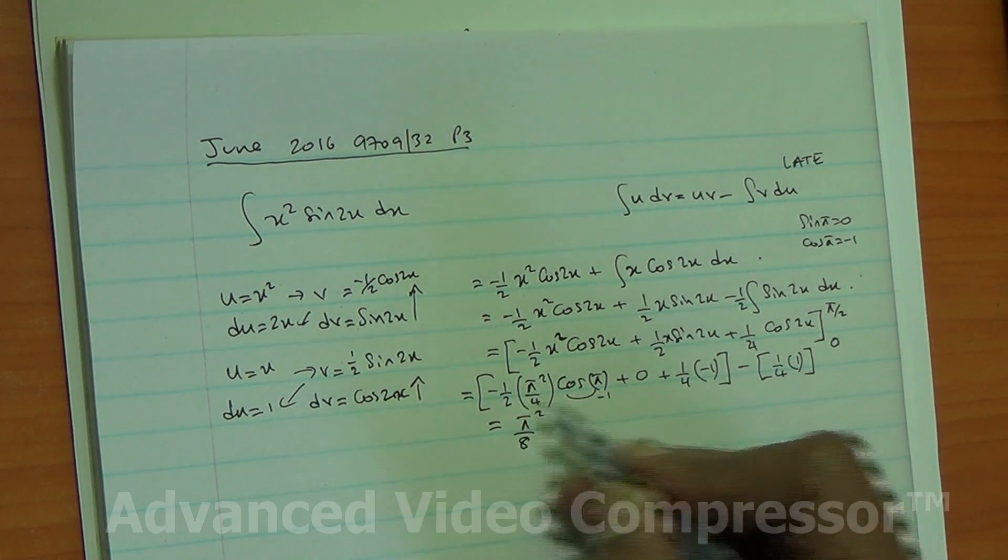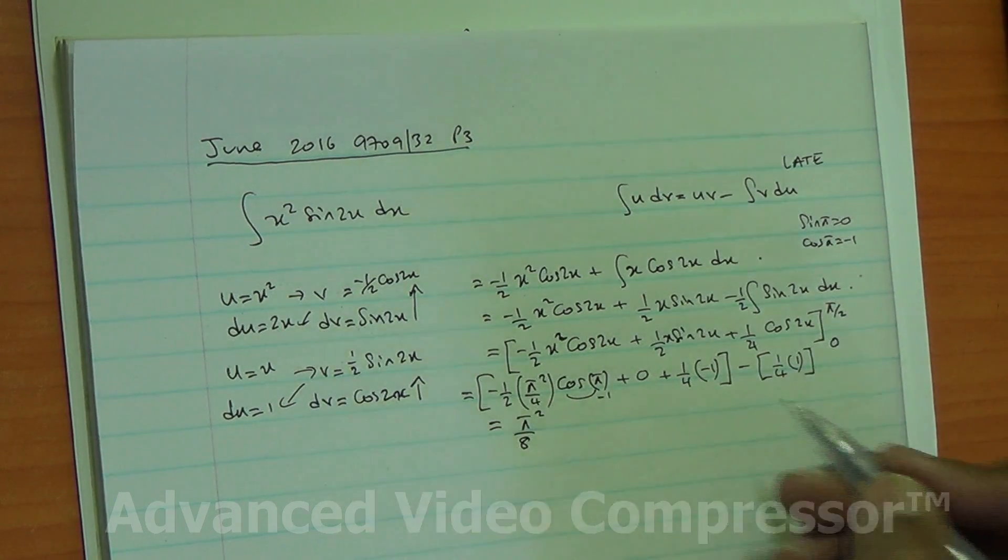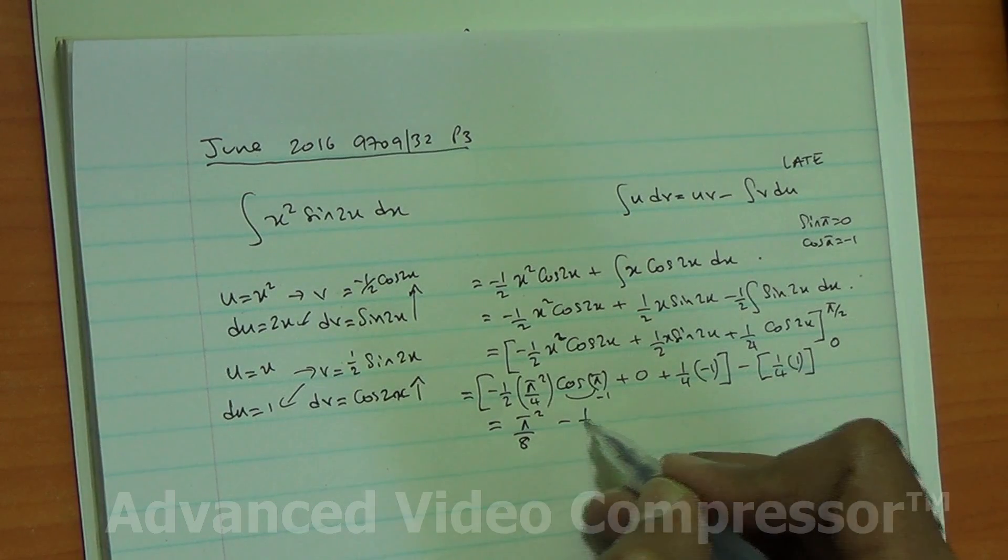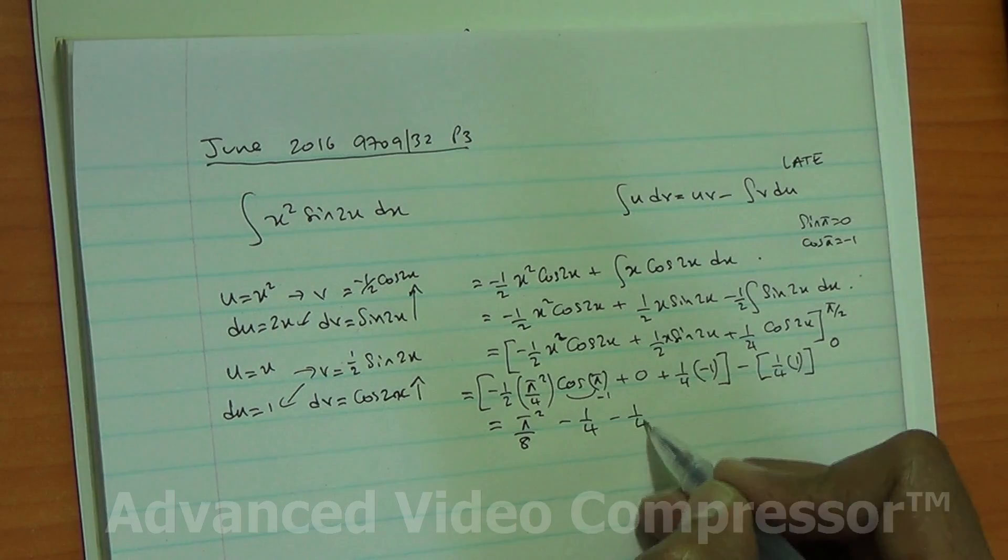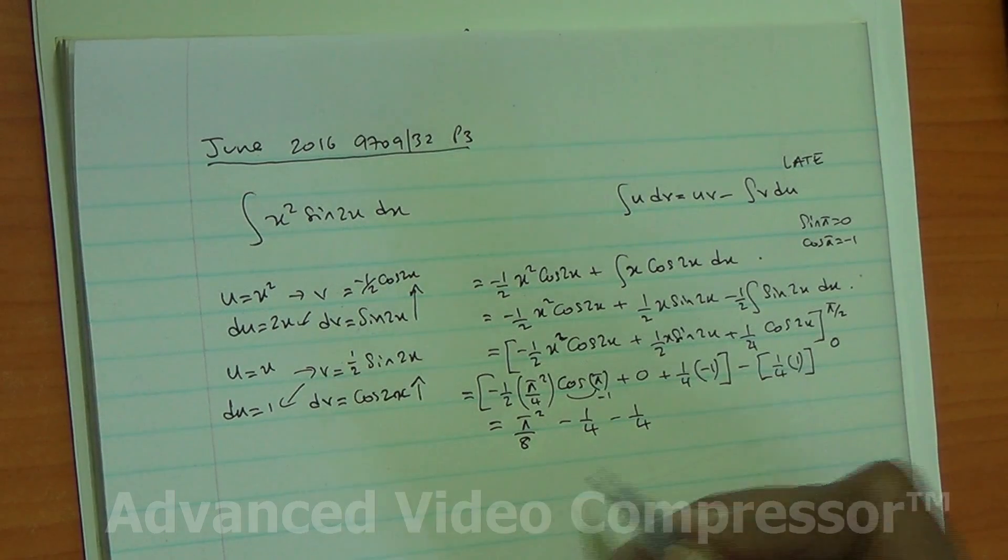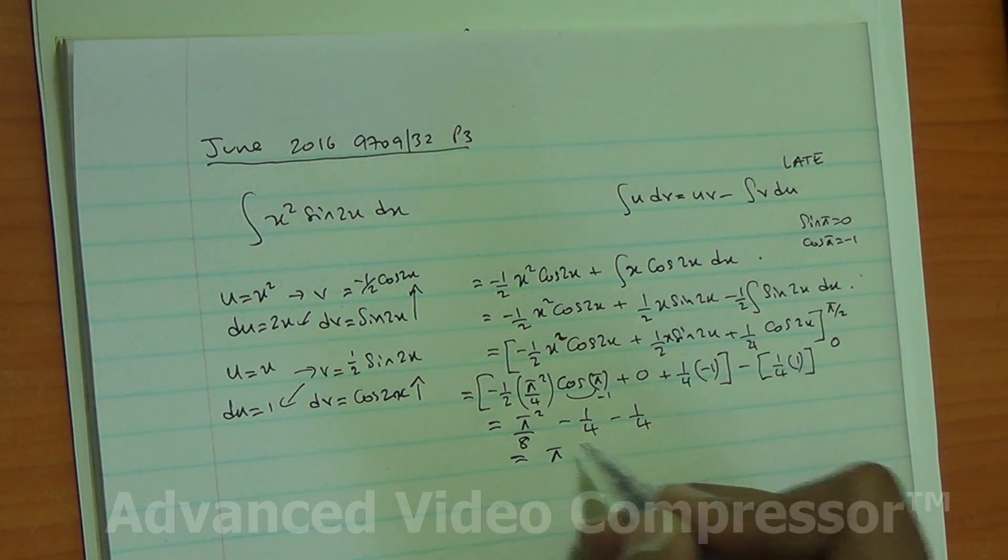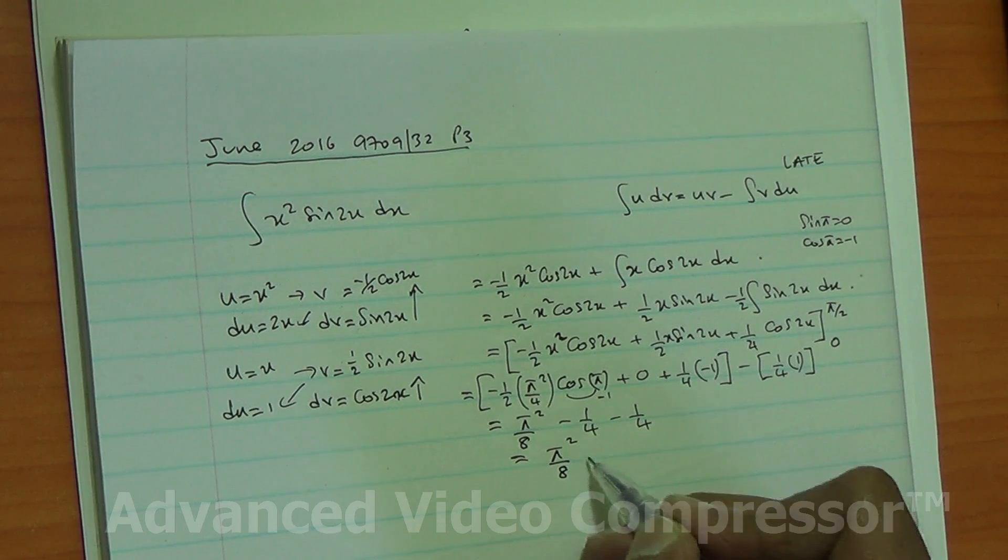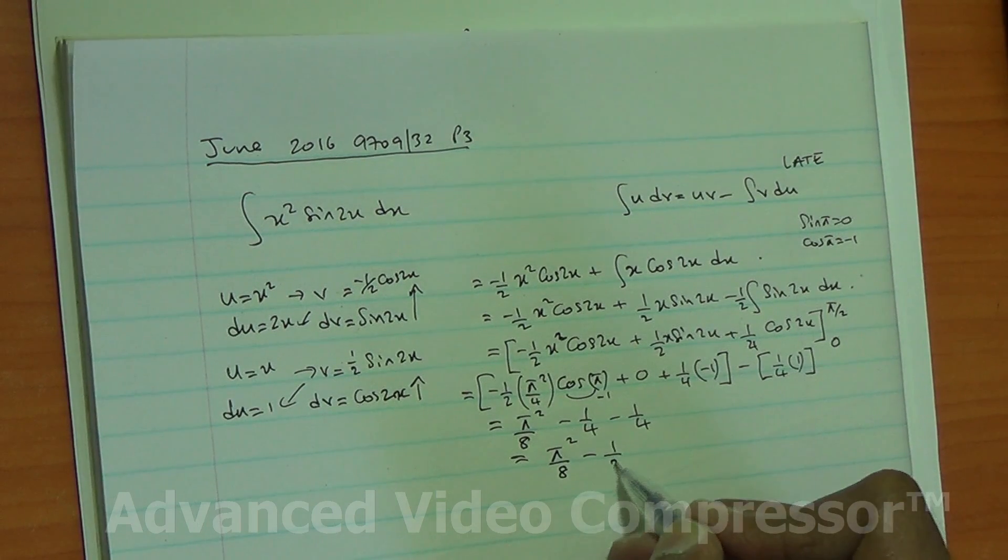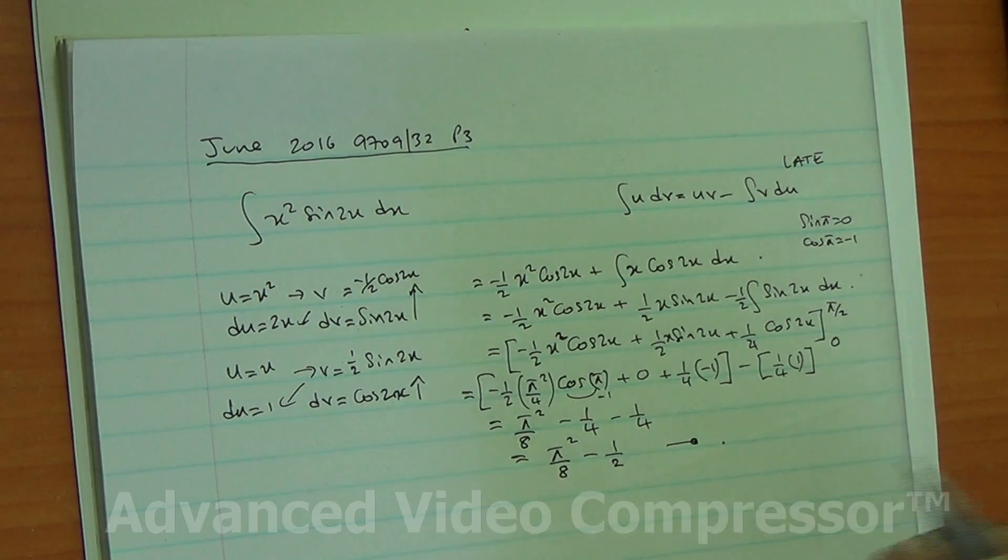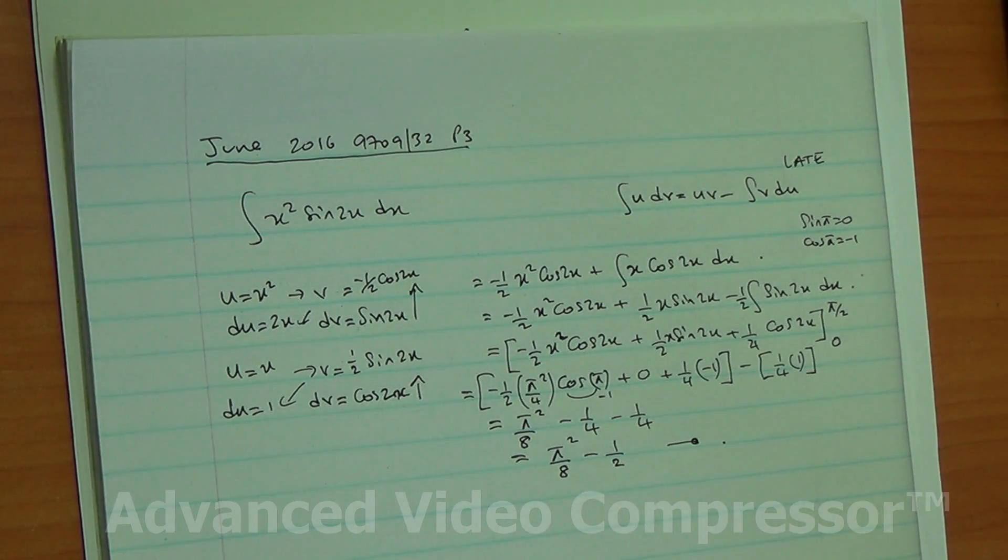And then minus 1 quarter again. So, the answer to that question is going to be pi squared upon 8, minus 1 quarter minus 1 quarter is minus half. So, here we are for this question.